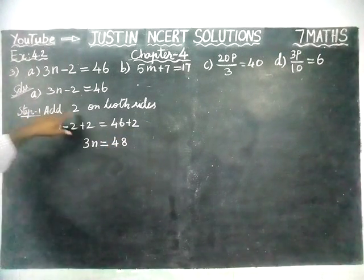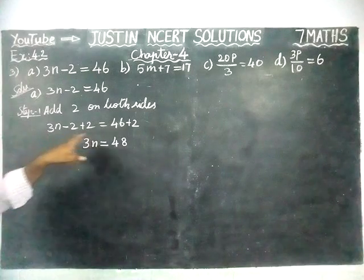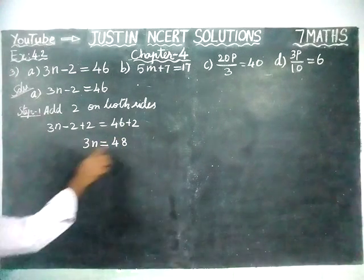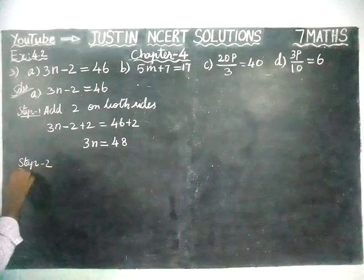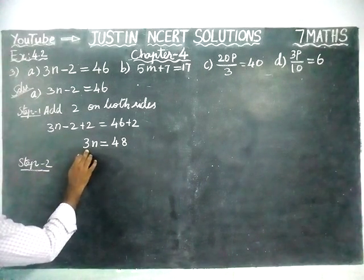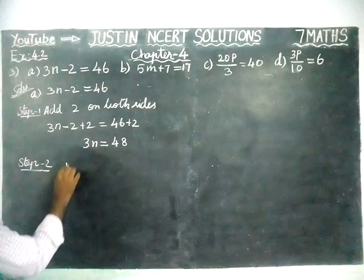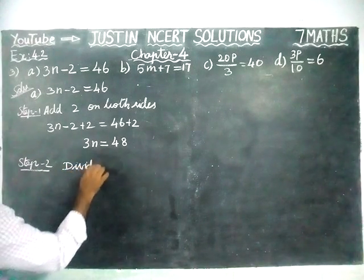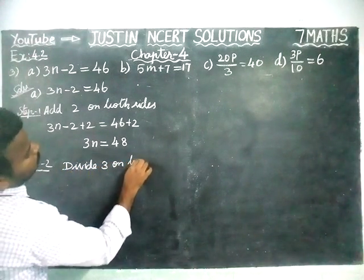In step 1, we added 2 on both sides, so the 2 gets cancelled and we get 3n equal to 48. Now in step 2, we have to cancel this 3. Since it is in multiplication, we are going to divide by 3 on both sides.